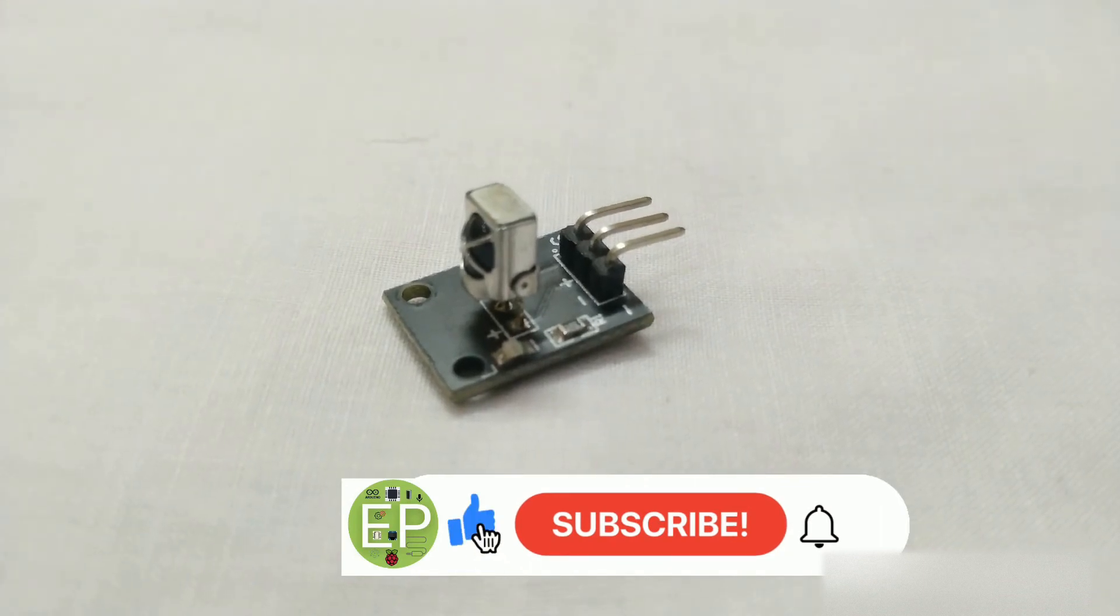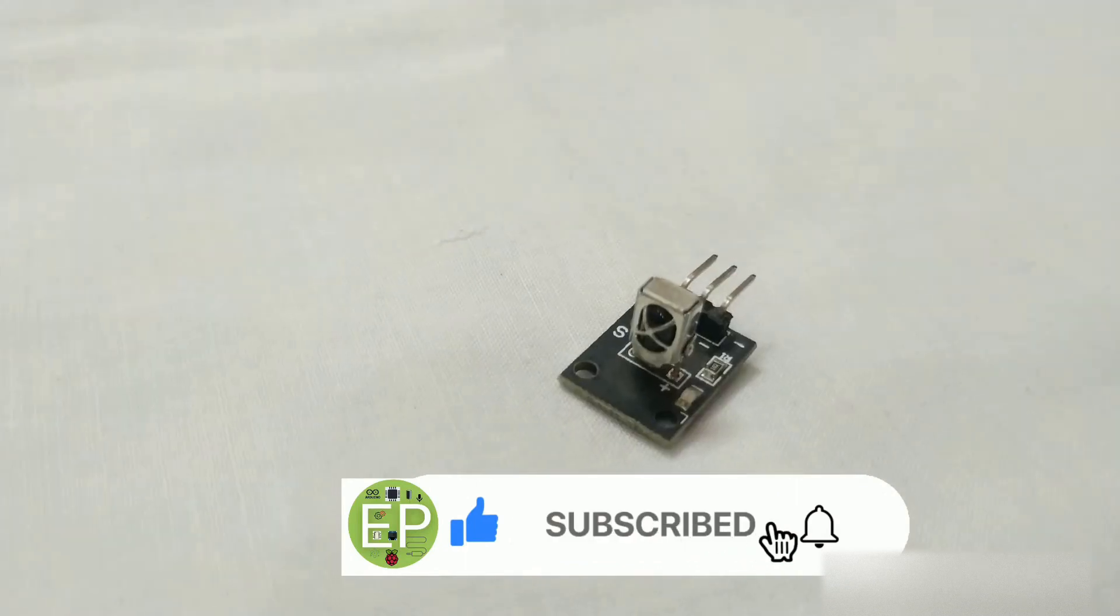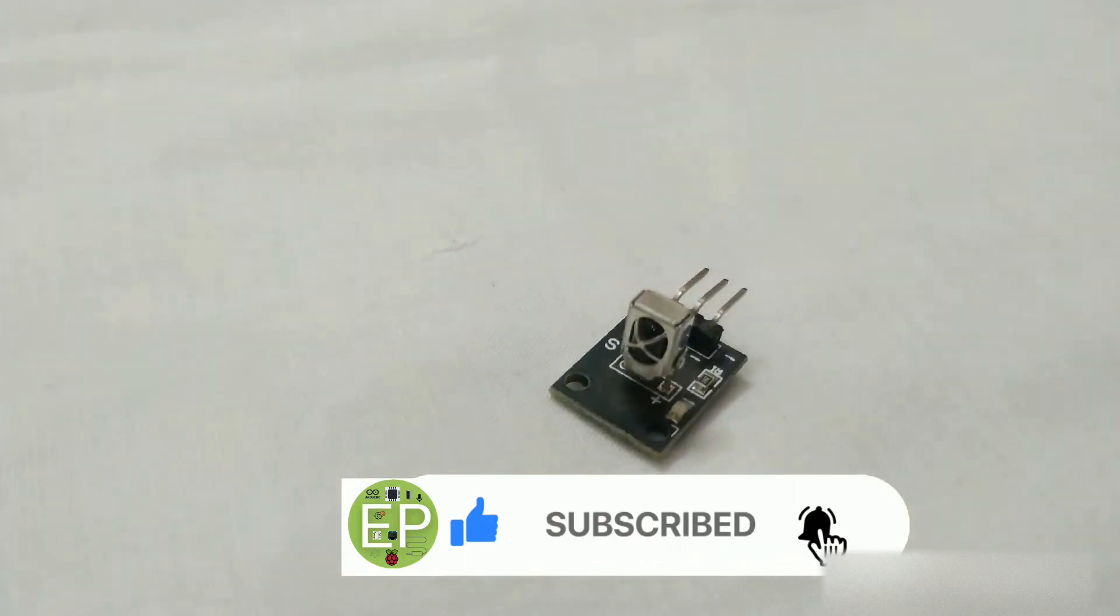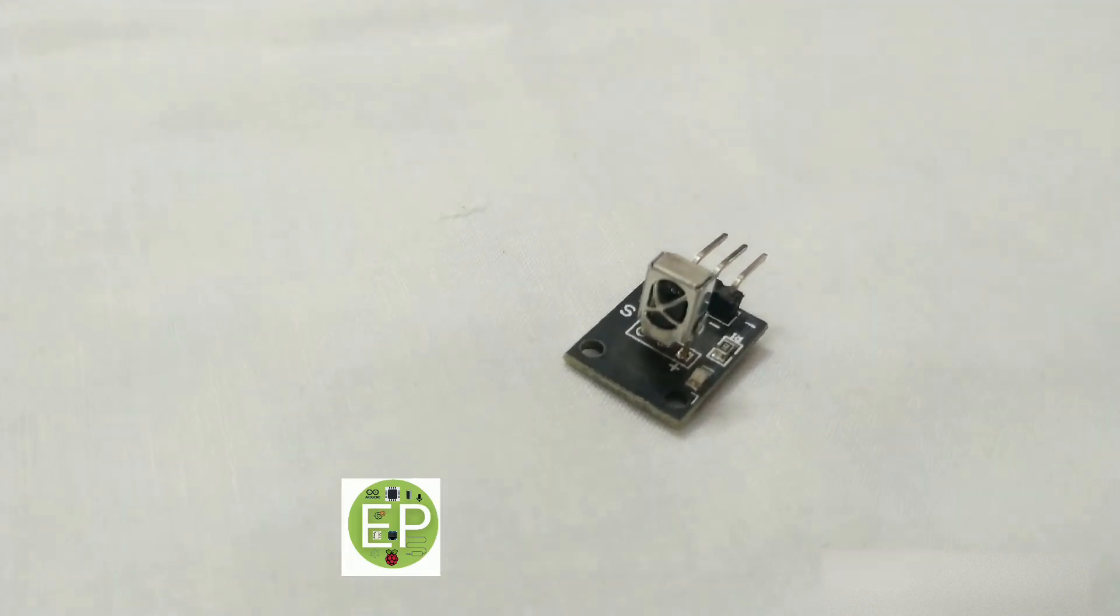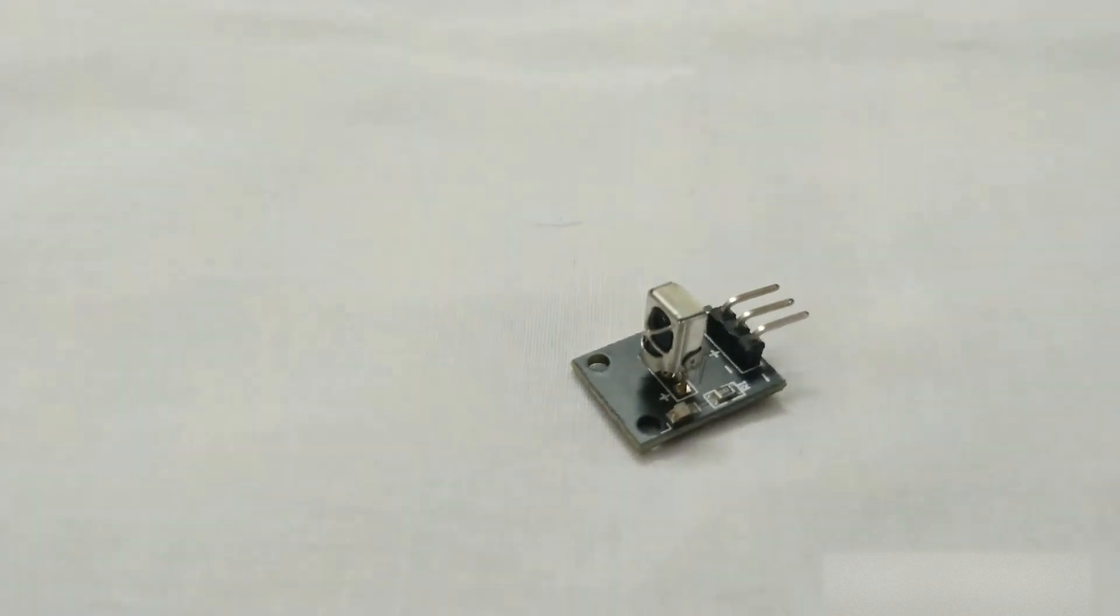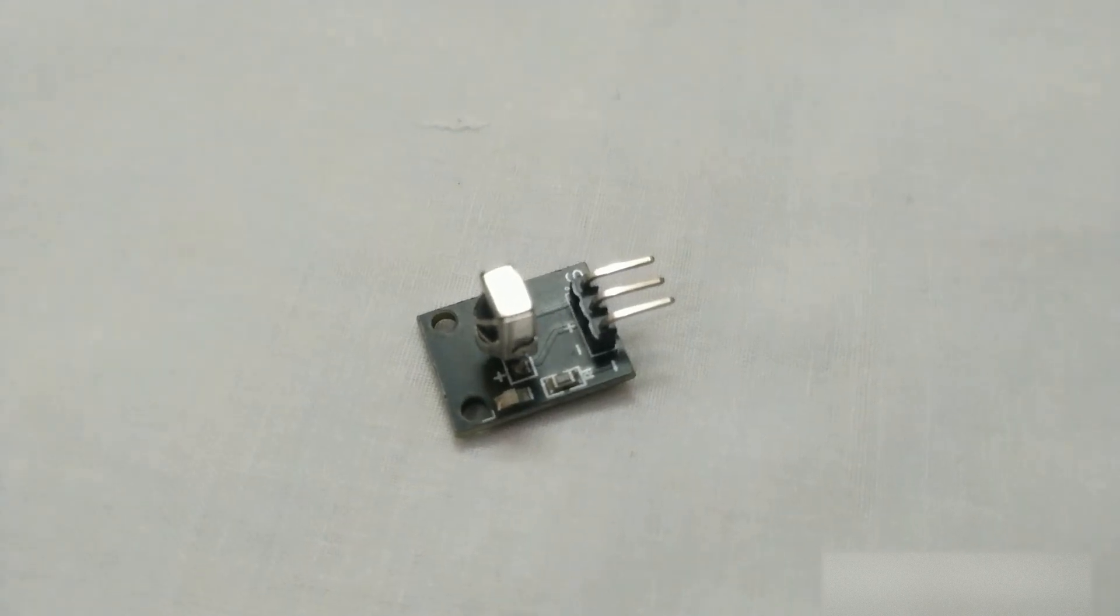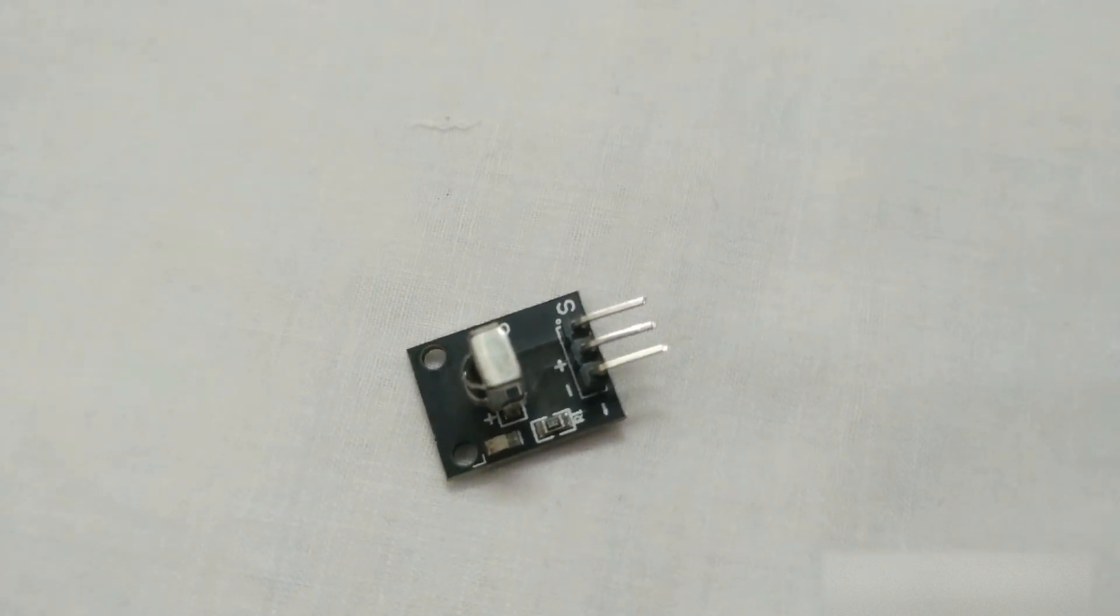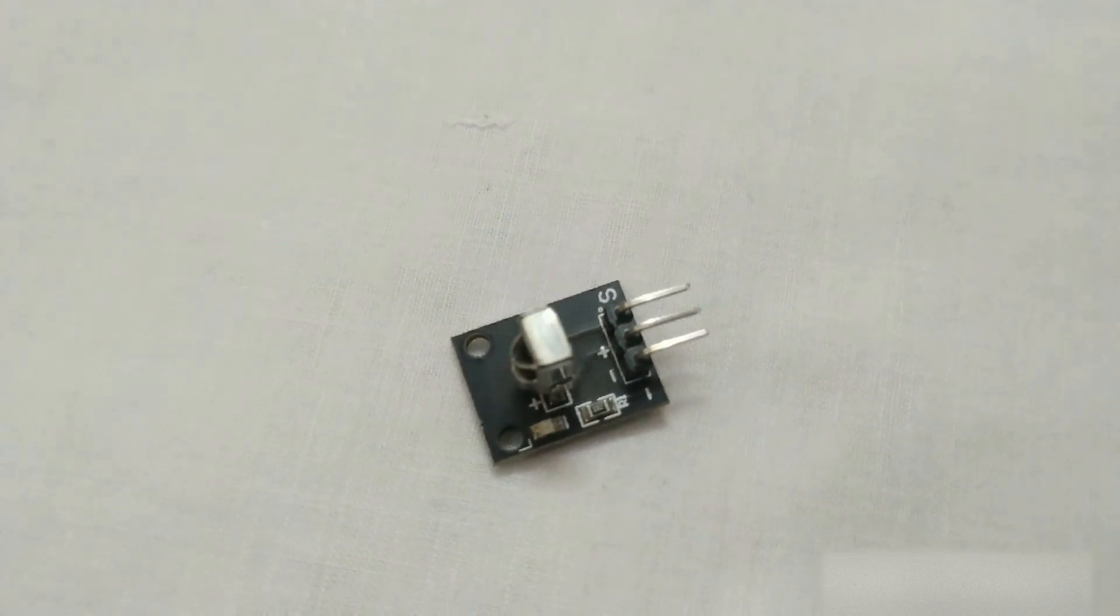Full form of TSOP is thin, small, outline package. Let's discuss what is TSOP. The TSOP is a miniature IR receiver which can be used in many ways to receive IR signals and decode remote signals. We will discuss it later in this video.